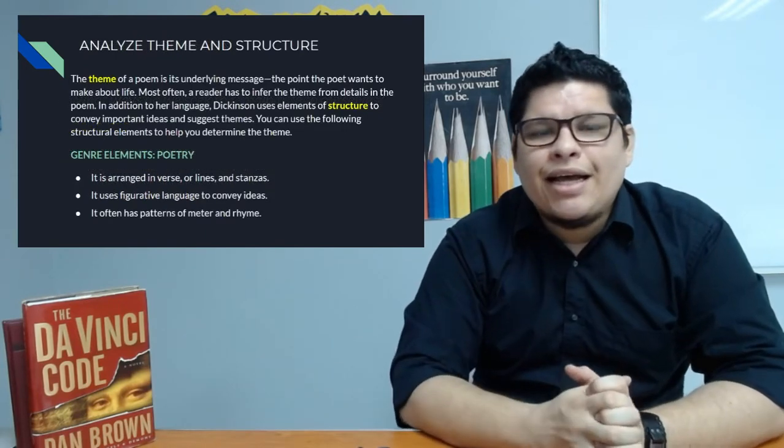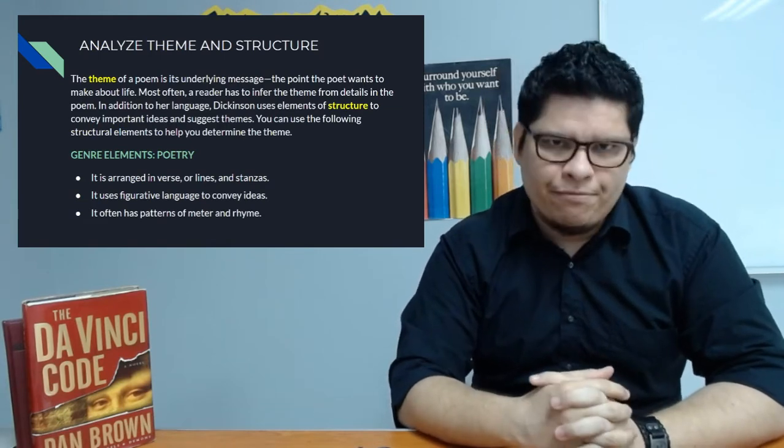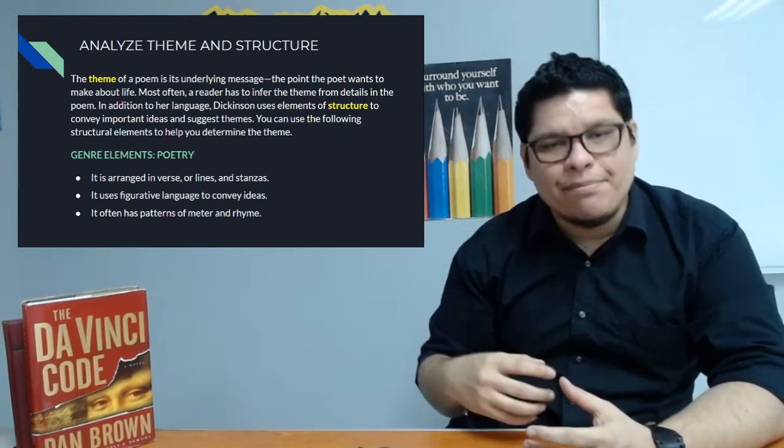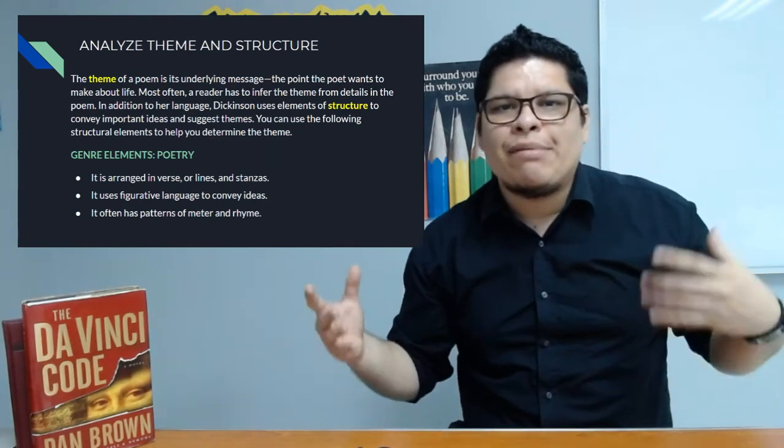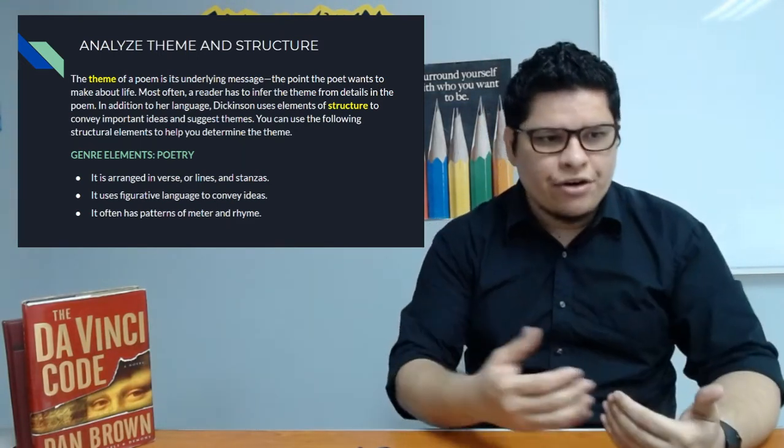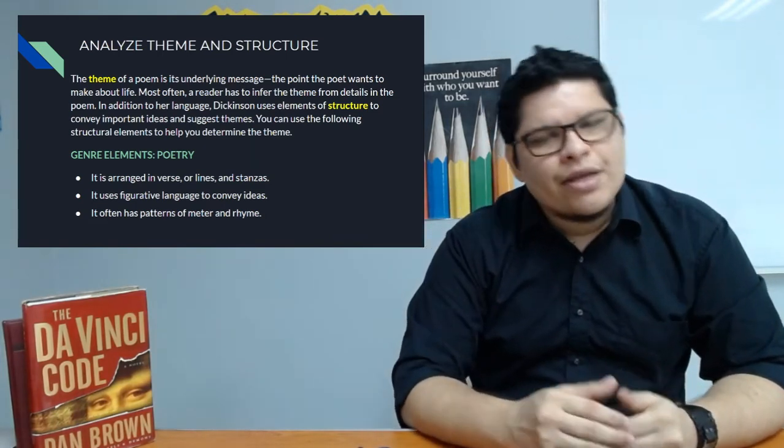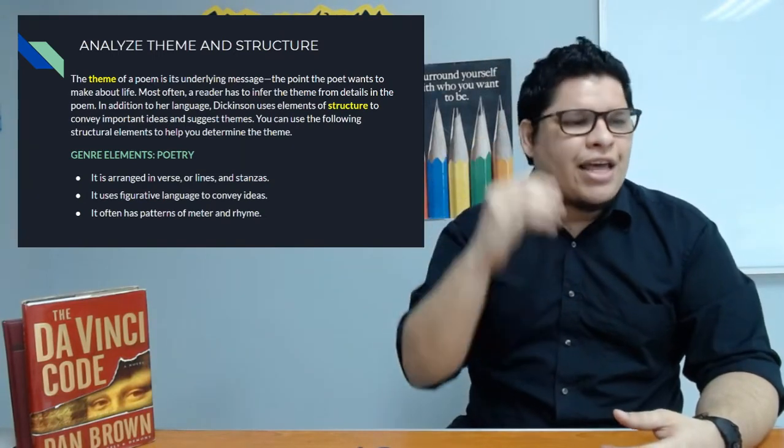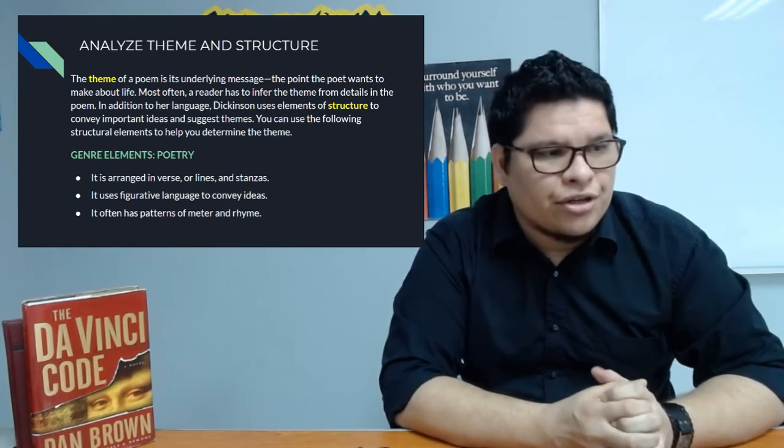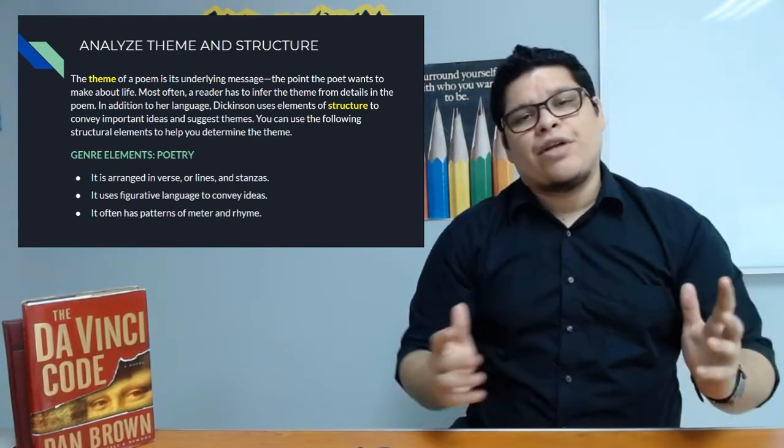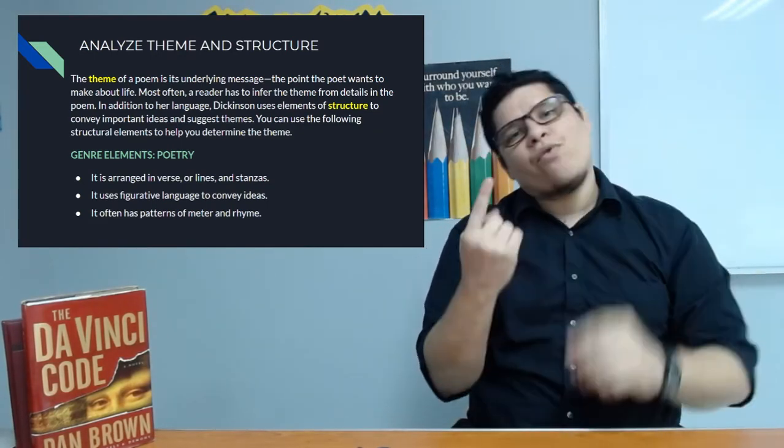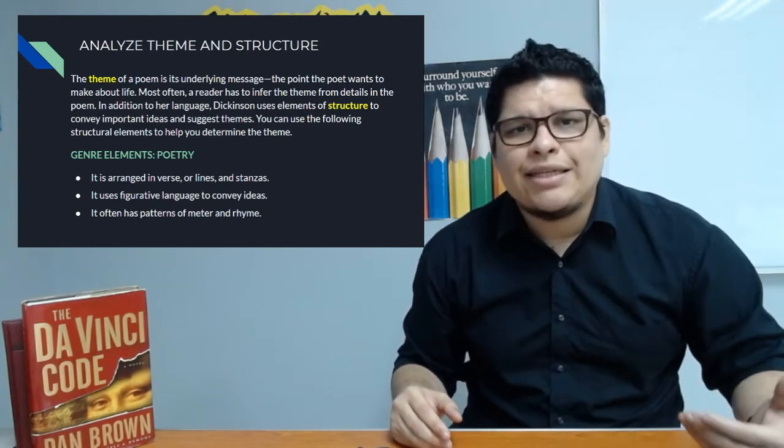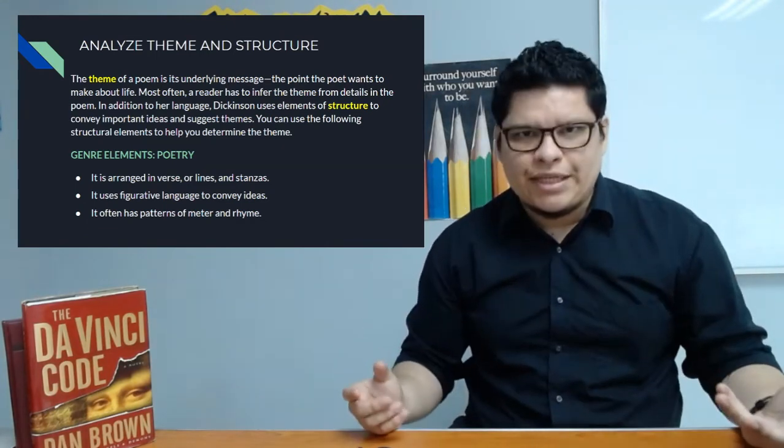Once we are finished with this activity, we're going to continue with the theory and analyze the themes and structures in the selection of poems by Ms. Dickinson. We got to remind that the theme of a poem is its underlying message - the message behind the poem. What is the poem trying to communicate for the reader, the point the poet wants to make about life? Most often the reader has to infer the theme from details in the poem. In addition to her language, Dickinson uses elements of structure to convey important ideas and suggest different themes. That's one of the beautiful things about poetry - a poem can not only be about one theme, but you can actually have different interpretations. That's what we call ambiguity, when a text has different interpretations, different underlying messages, different purposes.